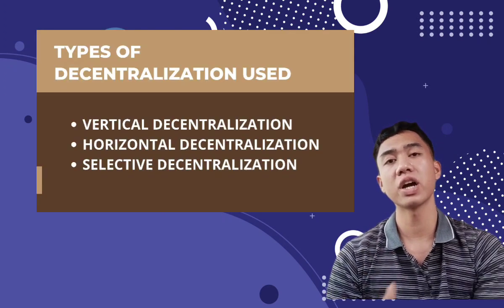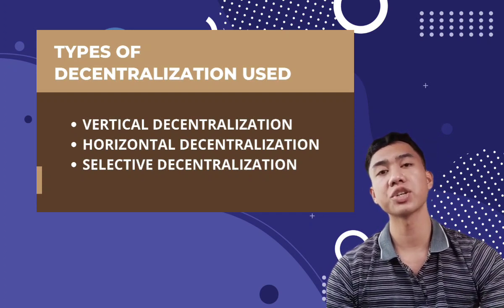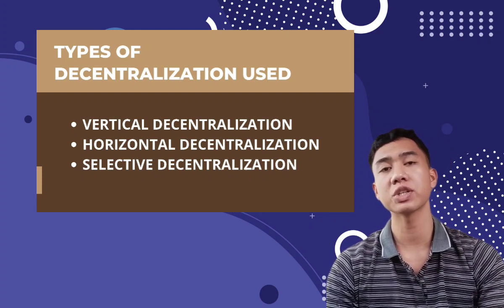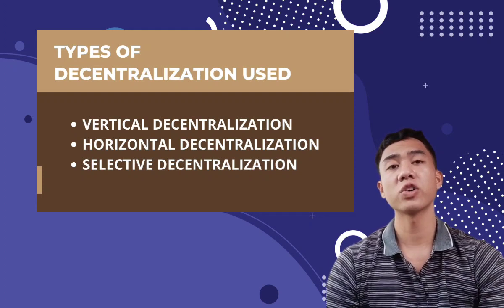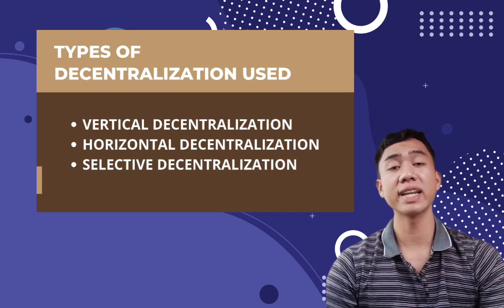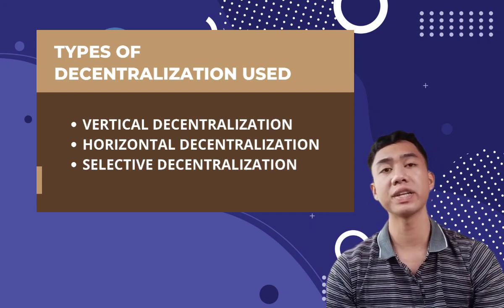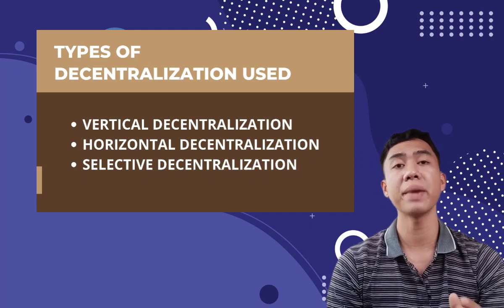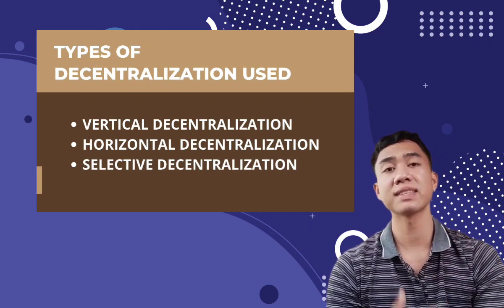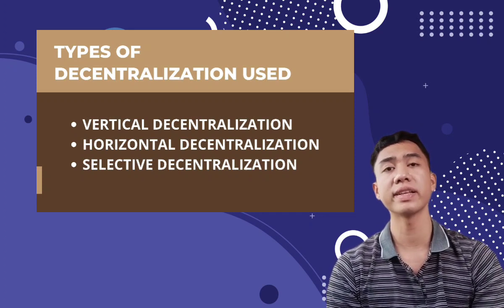The third basic dimension of an organization is the type of decentralization it employs. There are three types: vertical decentralization, which is the distribution of power down the chain of command or shared authority between superordinates and subordinates; horizontal decentralization, which is the extent to which non-administrators including staff make decisions or share authority between line and staff; and selective decentralization, which is the extent to which decision-making power is delegated to different units within the organization.